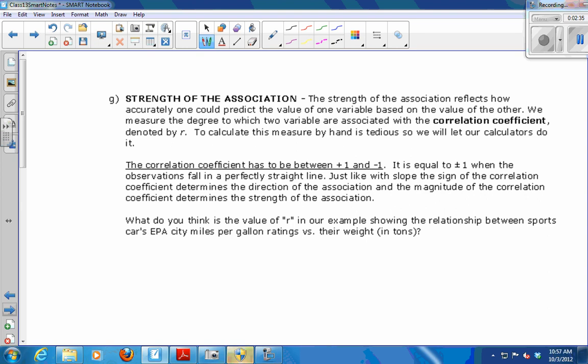So if you can predict it with perfect accuracy, we say the correlation coefficient is either positive one or negative one. When the direction of the association is positive, we say it's positive one. If the direction's negative, the correlation coefficient would be negative one if it was perfect. And if it's not perfect, it falls somewhere in between negative one and one. The closer to zero it is, the worse the predictive value, the less a relationship there is.